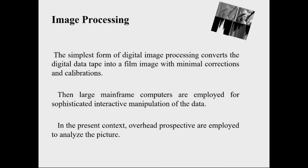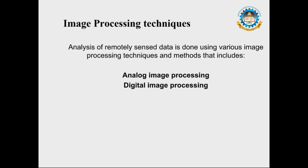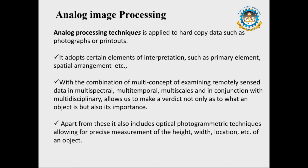For the second method, image processing, the simplest form converts digital data into a film image with minimal corrections and calibrations. Large mainframe computers are employed for sophisticated interactive manipulation of the data. Overhead perspectives are employed to analyze the picture. Image processing can be classified into two types: analog image processing and digital image processing.